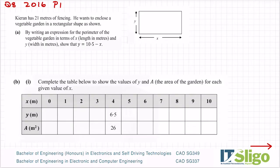Right, the functions and calculus question from 2016, question 8, one of the longer questions. Ciaran has 21 meters of fencing. He wants to enclose a vegetable garden in a rectangular shape as shown. Okay, and I am presumably going to use all 21 meters of fencing. By writing an expression for the perimeter of the vegetable garden in terms of x and y, show that y is equal to 10.5 minus x.